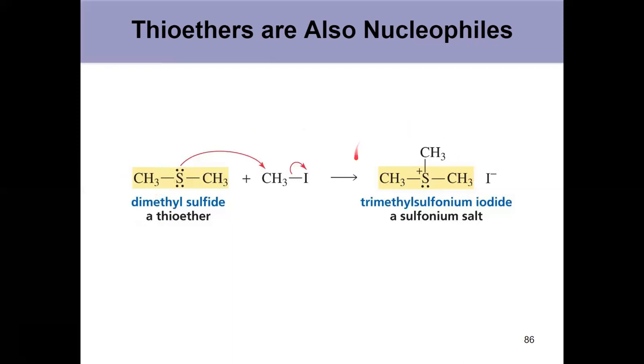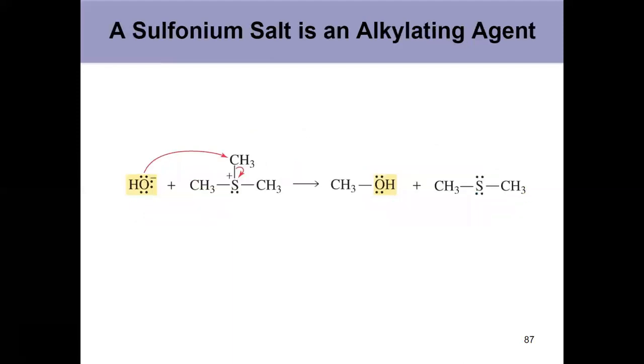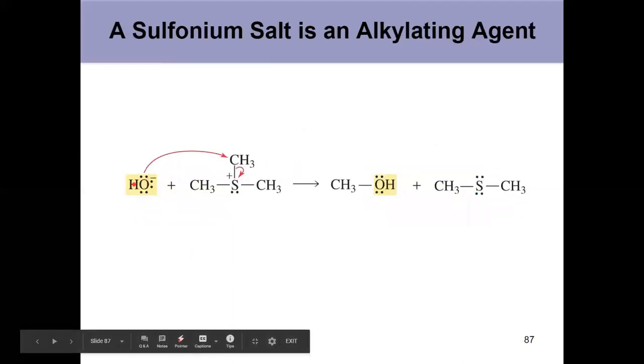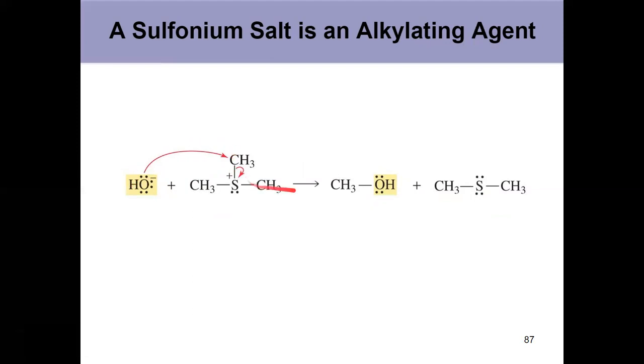That forms a sulfonium salt over here, positive charge on sulfur. That's nice because then I've got a positive charge and something that's a really good leaving group. So it'll react with other nucleophiles. Now if I introduce hydroxide into solution, that can come in, attack one of those carbons. This is a leaving group down here. And look at that. In solution, I form methanol and I'm back to having a thioether. That's called an alkylating agent.